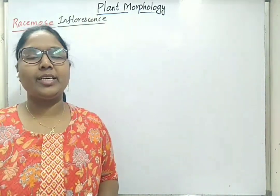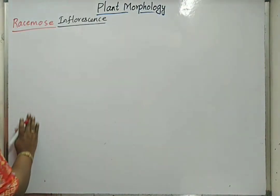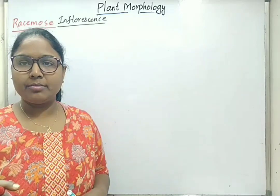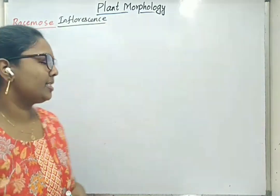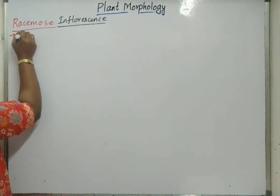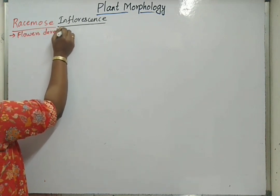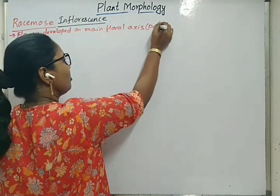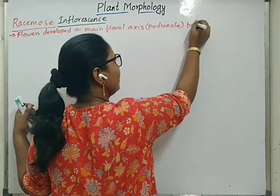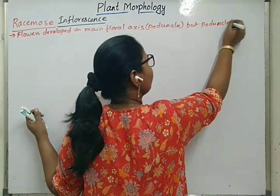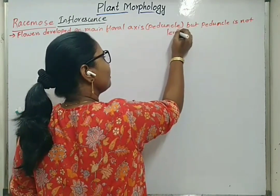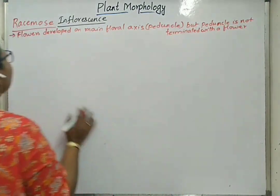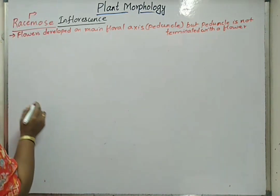Hello students. Now we will learn about different types of racimose inflorescence. Racimose inflorescence means flowers are developed on the main floral axis, but the tip region or the apex of the peduncle is not terminating with a flower. Such type of inflorescence is called racimose inflorescence. In racimose inflorescence, we see arrangement of flowers in acropetal manner or order.